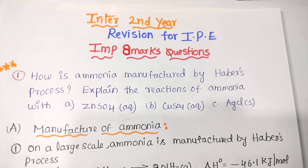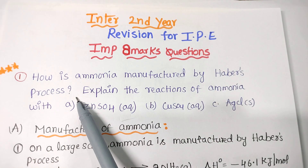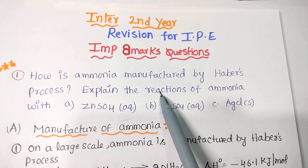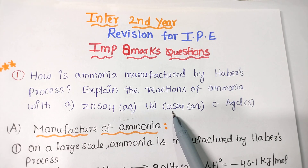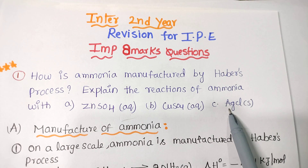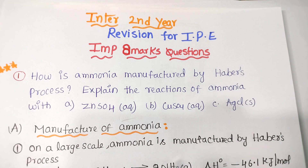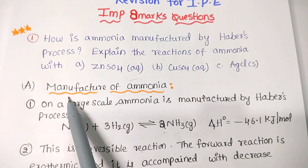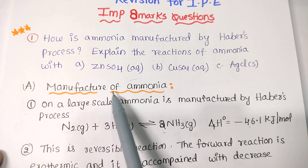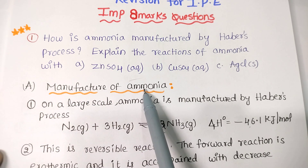P-block elements 8 marks questions. First question is: how is ammonia manufactured by Haber's process? Explain the reactions of ammonia with zinc sulfate, copper sulfate, and silver chloride. The side heading is manufacture of ammonia.